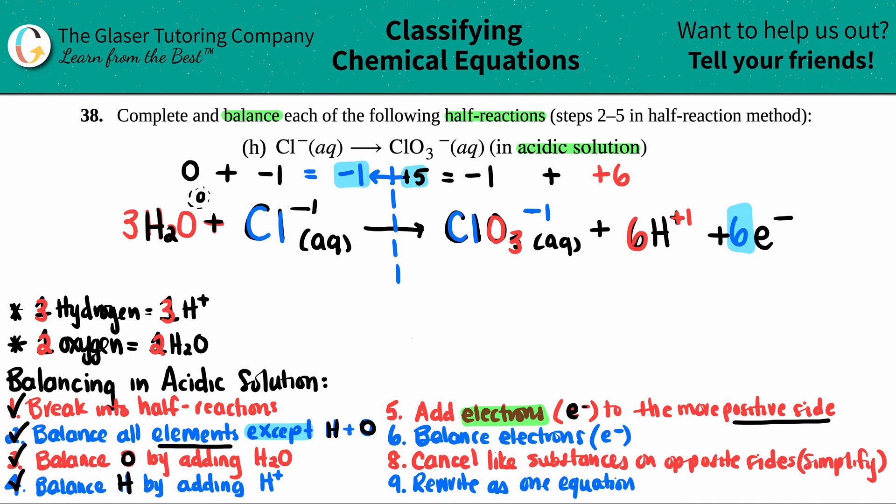There's nothing that I can cancel. Everything is unique across the board. So your final answer would be 3H2O plus Cl minus, which is aqueous, yields ClO3 minus aqueous plus 6H plus, and then plus six electrons. And that's it.